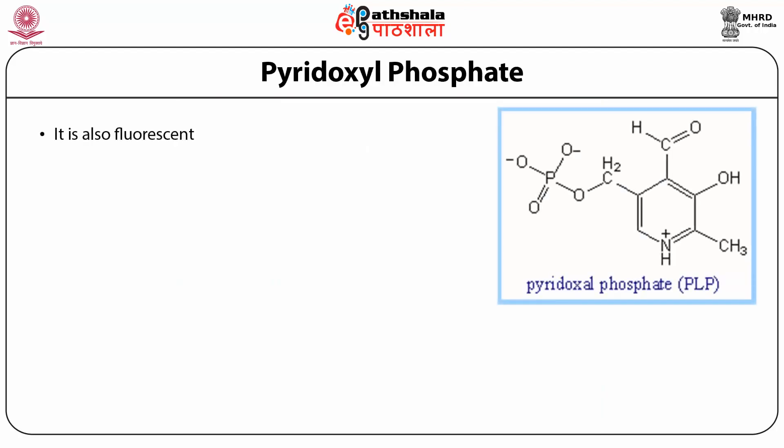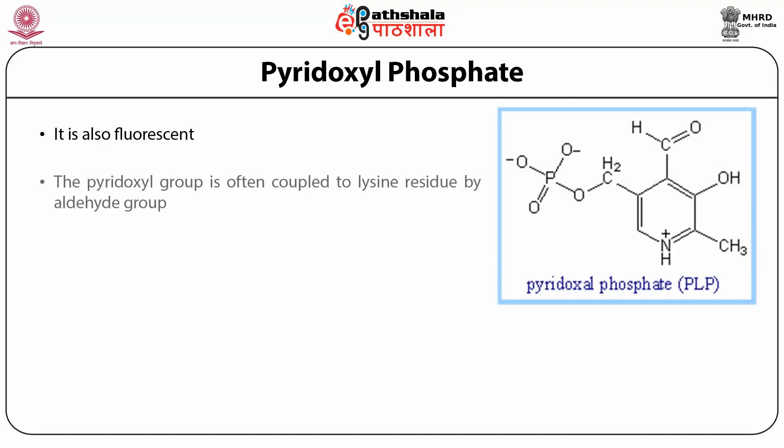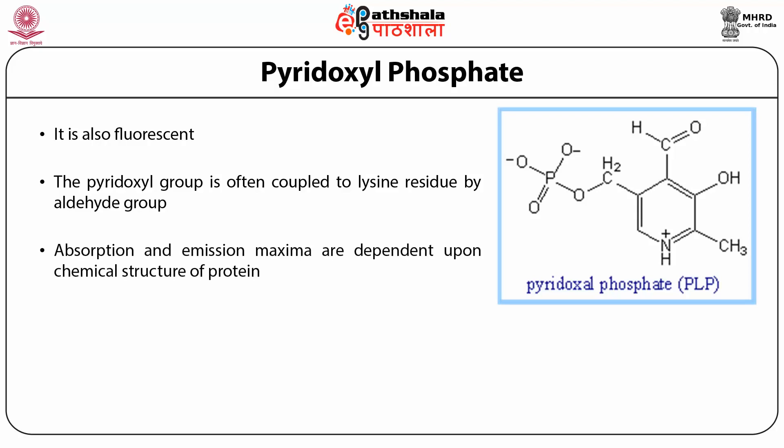Pyridoxal phosphate is another compound which shows intrinsic fluorescence. The pyridoxal group is often coupled to a lysine residue by an aldehyde group. The absorption and emission maxima are dependent upon the chemical structure of the protein, meaning depending on the protein, the absorption and emission spectra of pyridoxal phosphate varies. Its emission spectra is also affected by the pH of the solution.